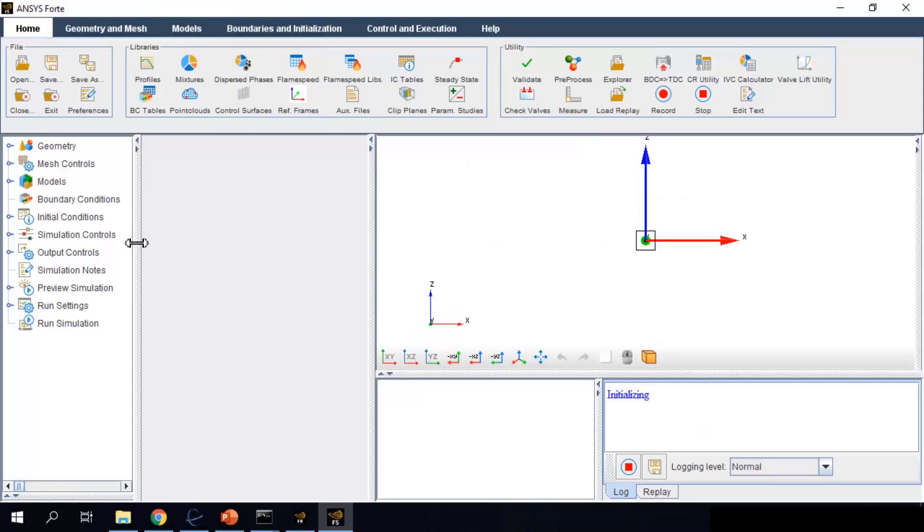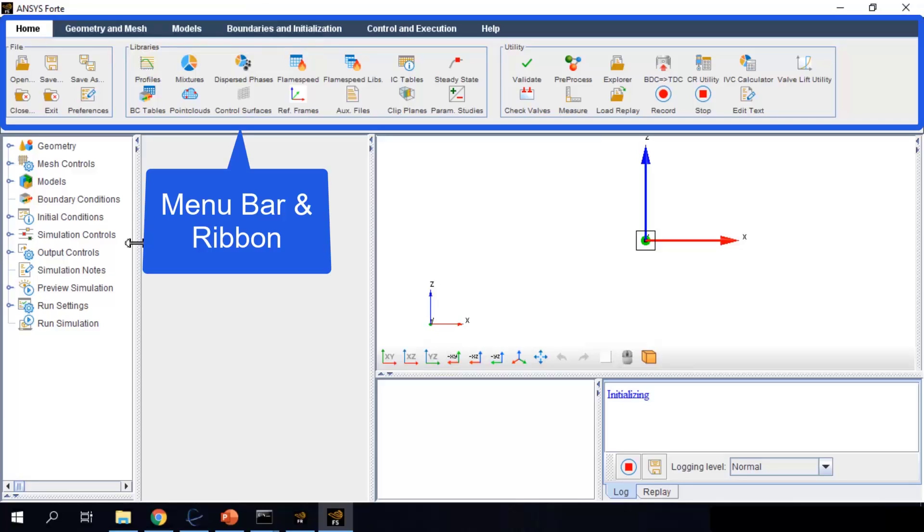Forte simulate is the user interface where you can set up a CFD simulation. On the top, you will see a menu bar and a ribbon where you can access all the commands and utilities used to set up the simulation.